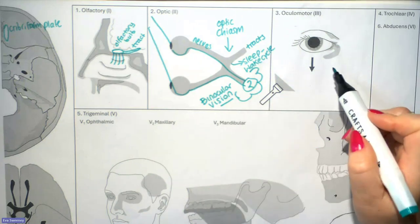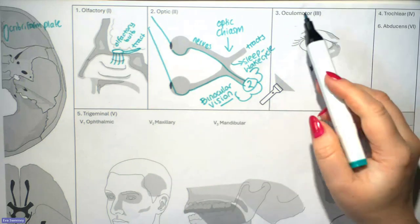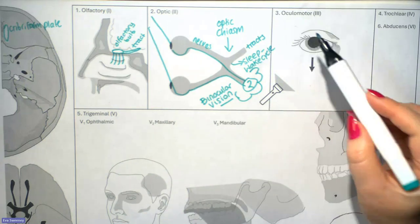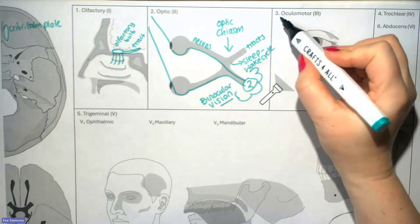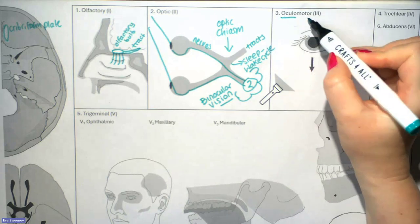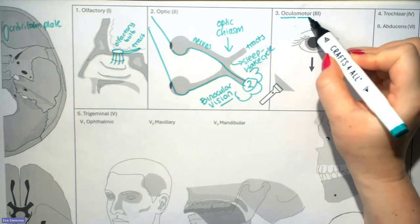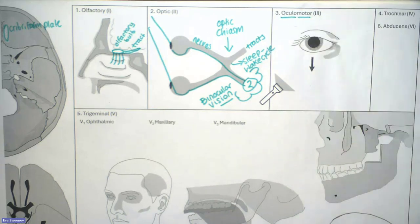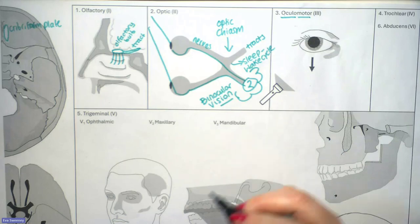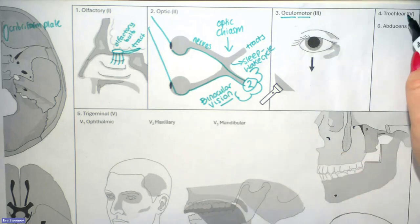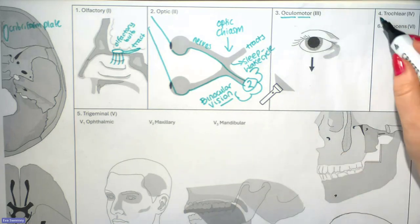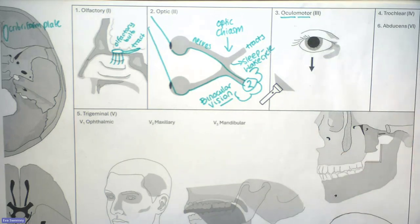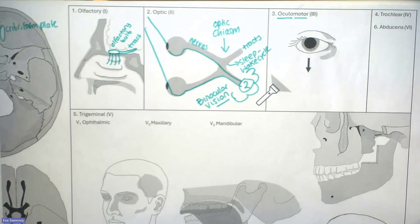Now we move on to the third cranial nerve, the oculomotor. As the name suggests — oculo meaning eye, motor meaning movement — it controls the muscles that move the eye. Cranial nerves four and six will also help with that action. So three, four, and six together make the eyes do tricks — they move the eye.